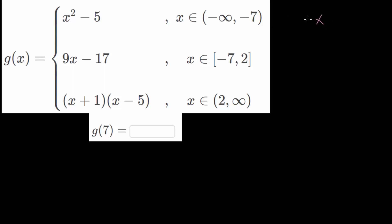We can say that x has to be bigger than negative infinity, but less than negative 7 for this output, this quadratic function. And for this linear function, x has to be bigger than or equal to negative 7 or less than or equal to 2. And for this bottom one, we have x values that are bigger than 2, but smaller than infinity.